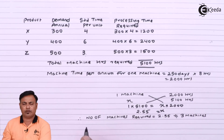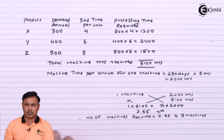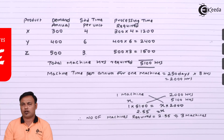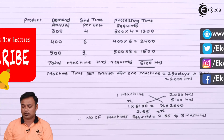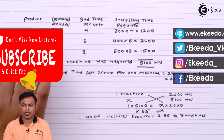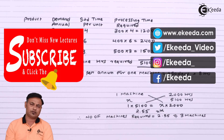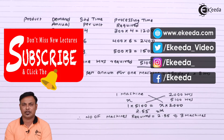So we will need 3 machines for the annual production of products X, Y, and Z. Thanks for watching this video. Do subscribe to our channel Ikida. Thank you.